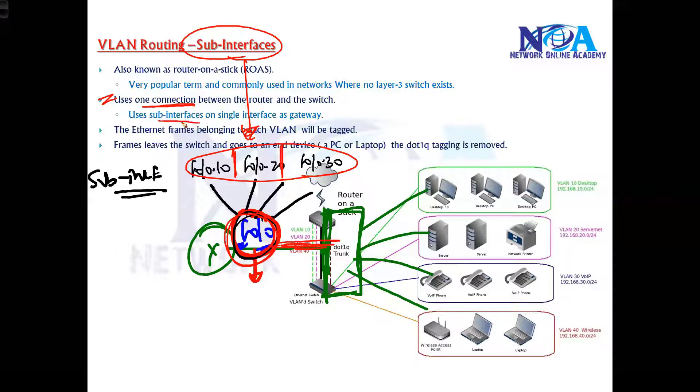But how we are going to separate? We still create sub-interfaces, which means if I have four VLANs, so I'm going to create how many sub-interfaces? Four sub-interfaces. If I have 10 VLANs I'm going to create 10 sub-interfaces. If you have 20 VLANs you are going to create 20 sub-interfaces.